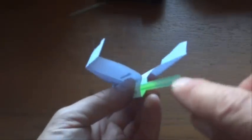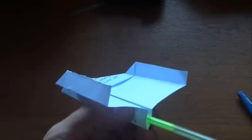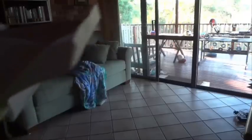And now what we're going to do is blow quickly down that bit of straw and that'll launch the plane and it'll start flying. So point your plane up a little bit into the air and give a really good sharp quick blow on the straw and let's see how it goes.